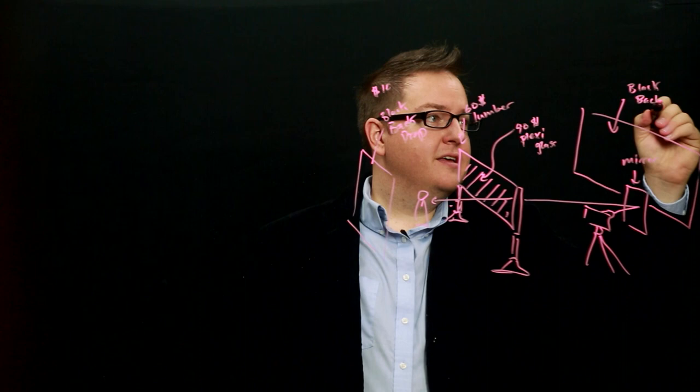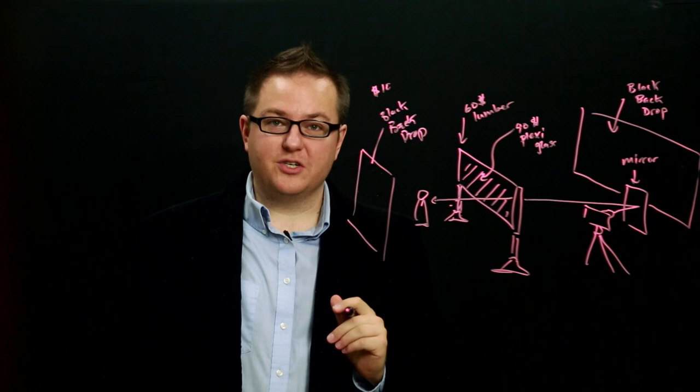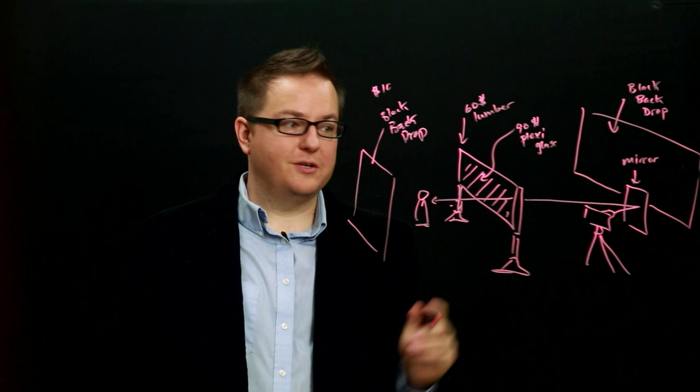So this gets rid of the remaining reflections for me. If I have a black backdrop on the back wall behind me and the wall behind the mirror, I don't get any reflections and my camera can be focused in pretty tightly on the mirror in order to see what's going on.